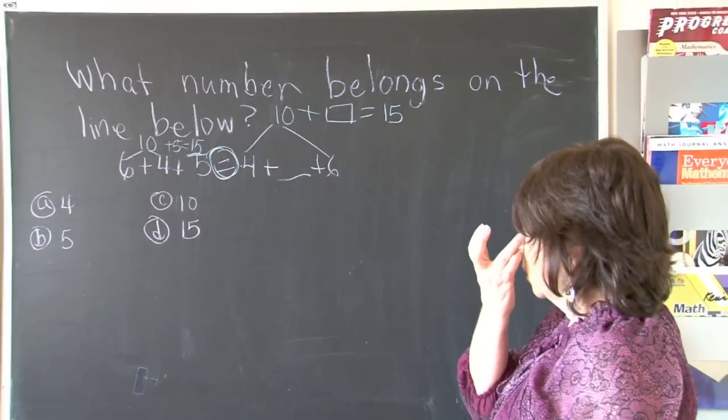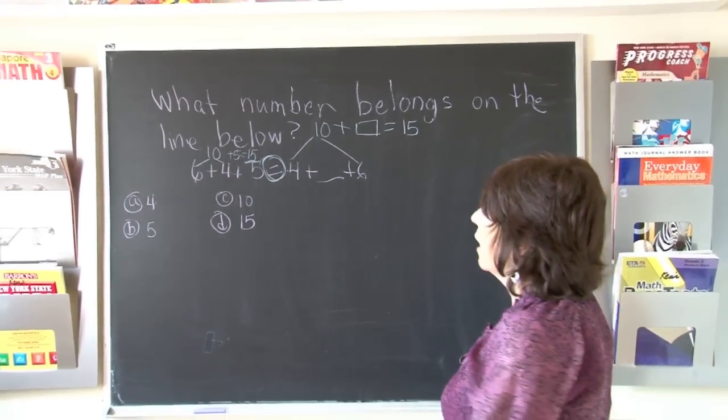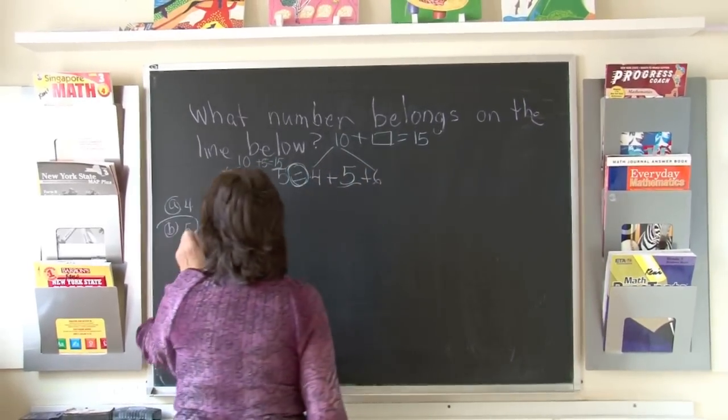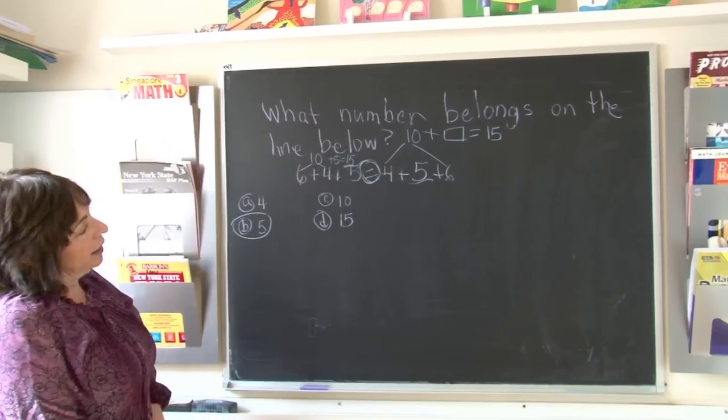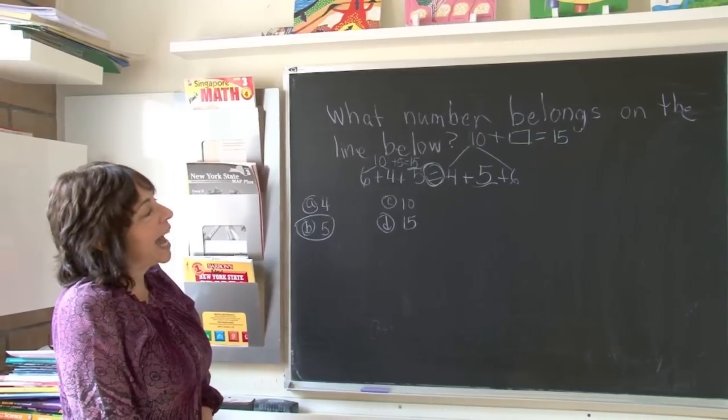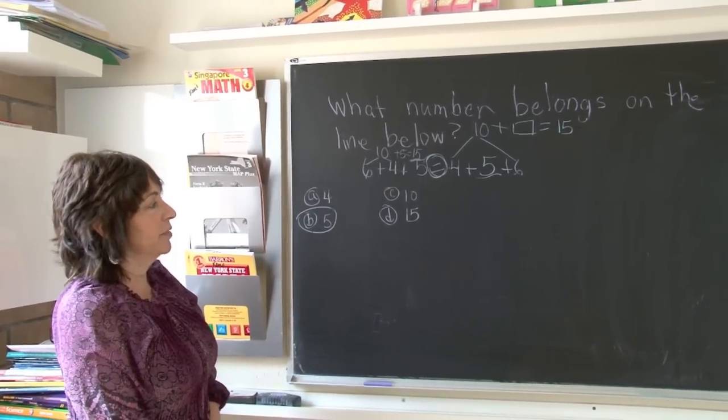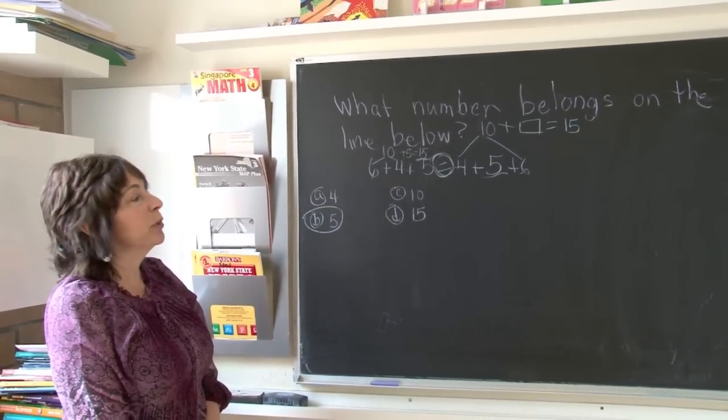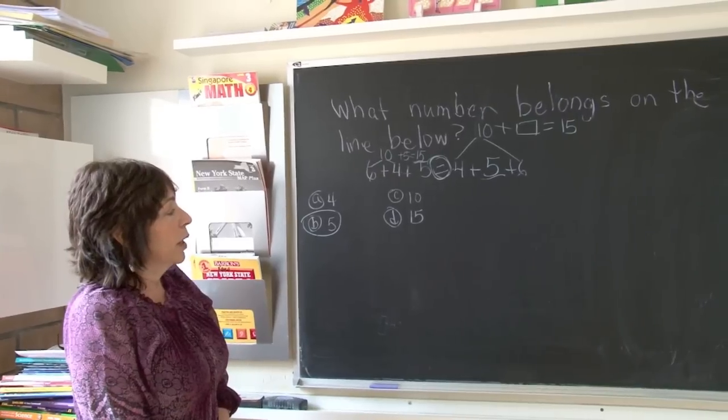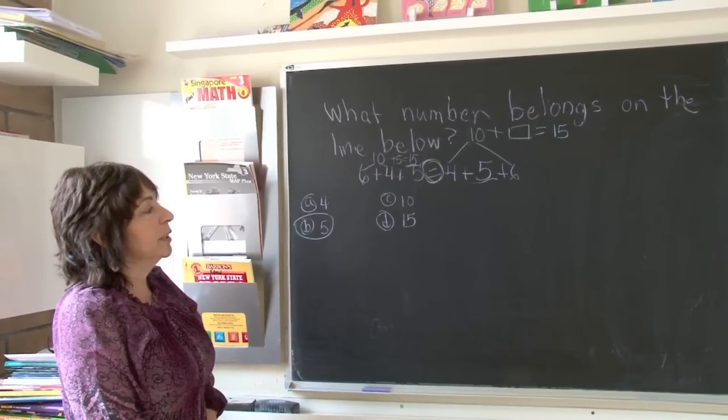We should all know that 10+5 is 15, but even if we did not know 10+5 is 15, this is even simpler than that. When we add, the order of the numbers does not matter.